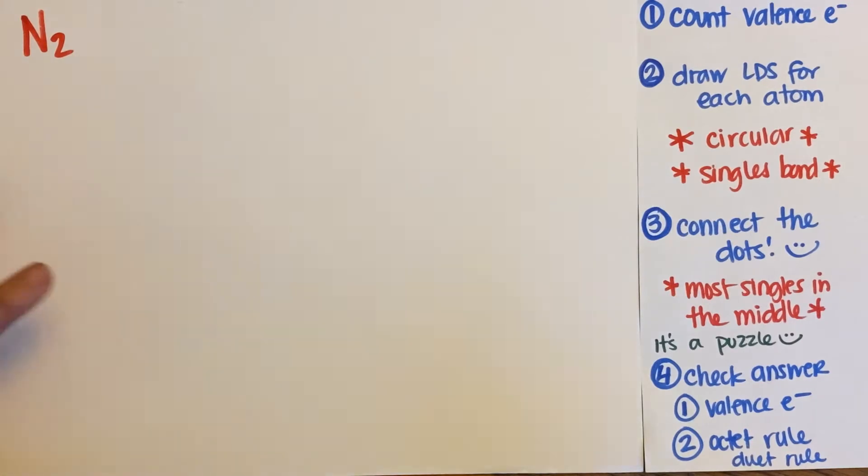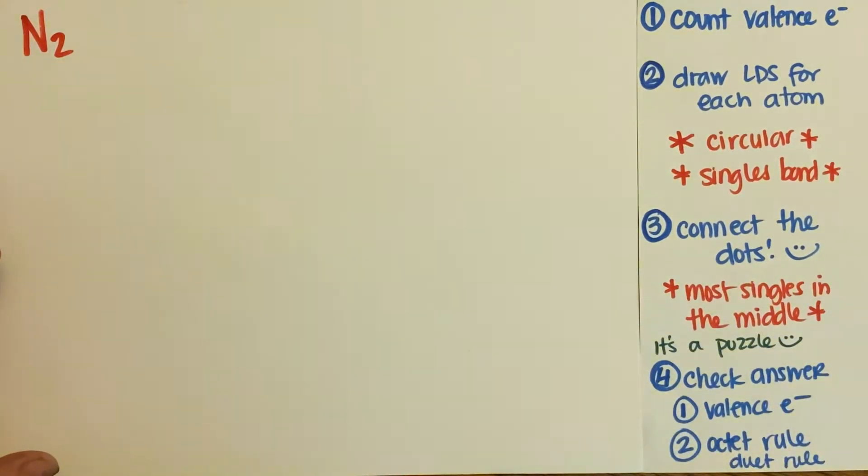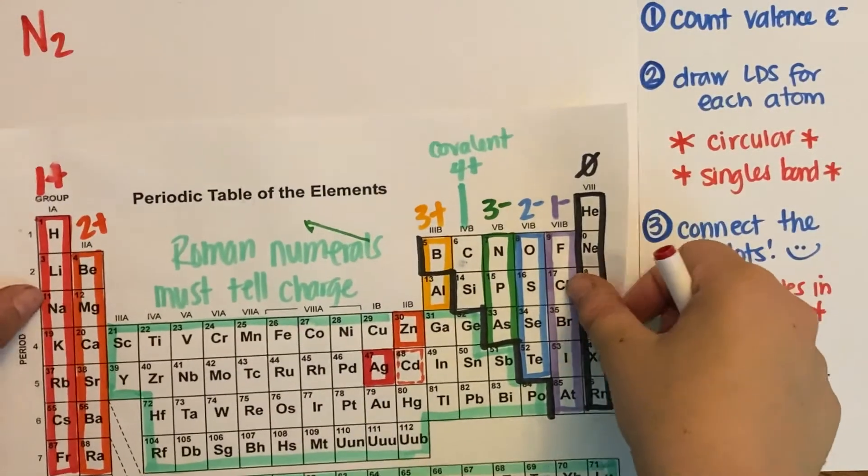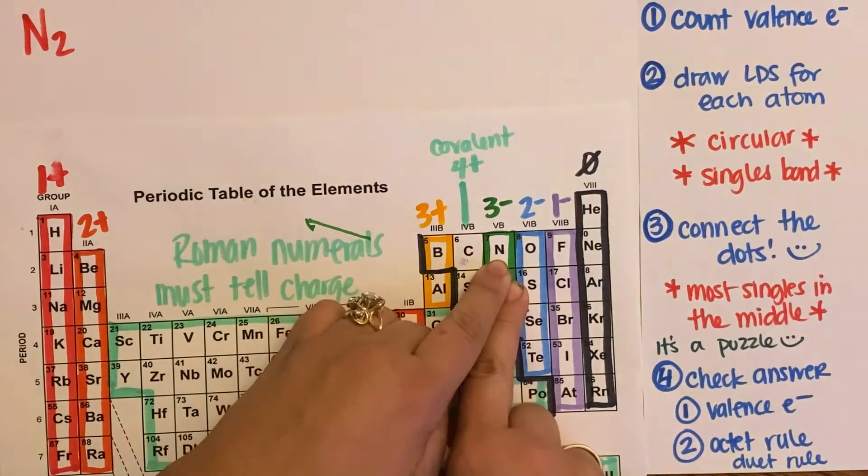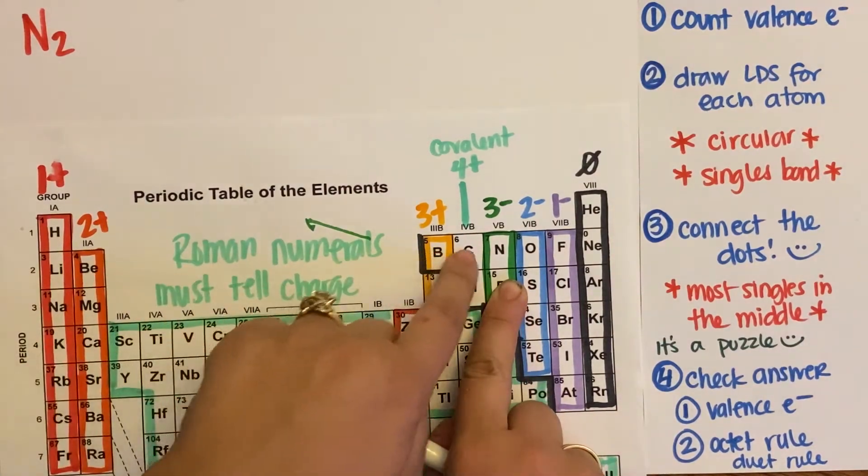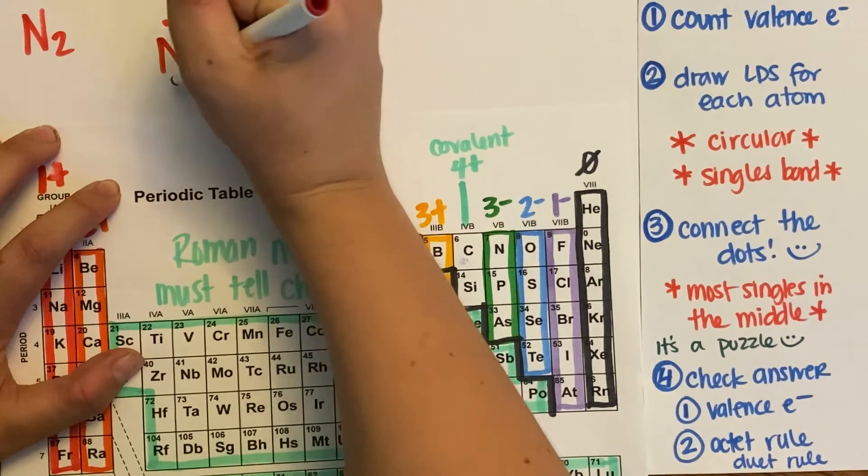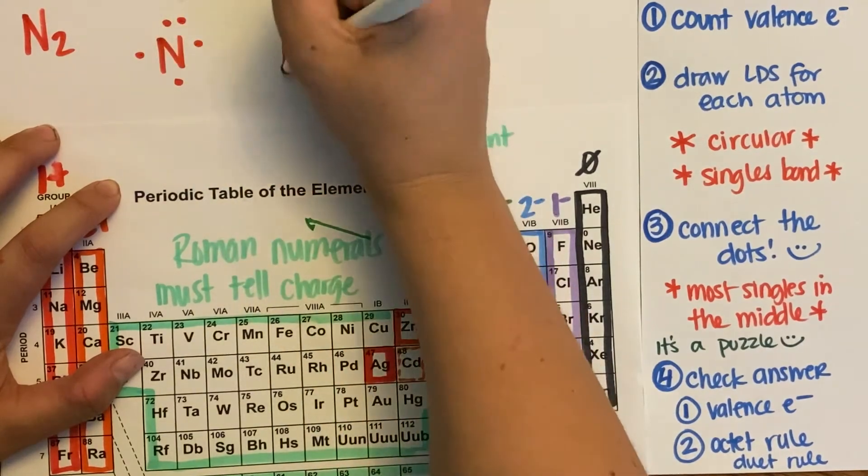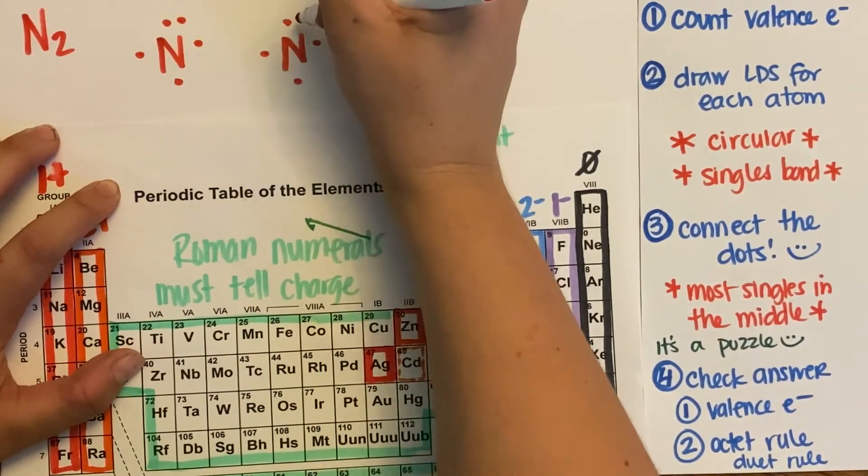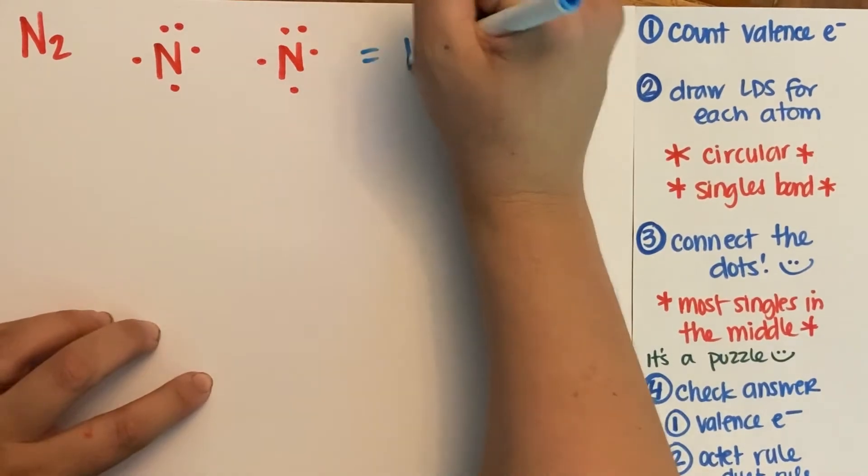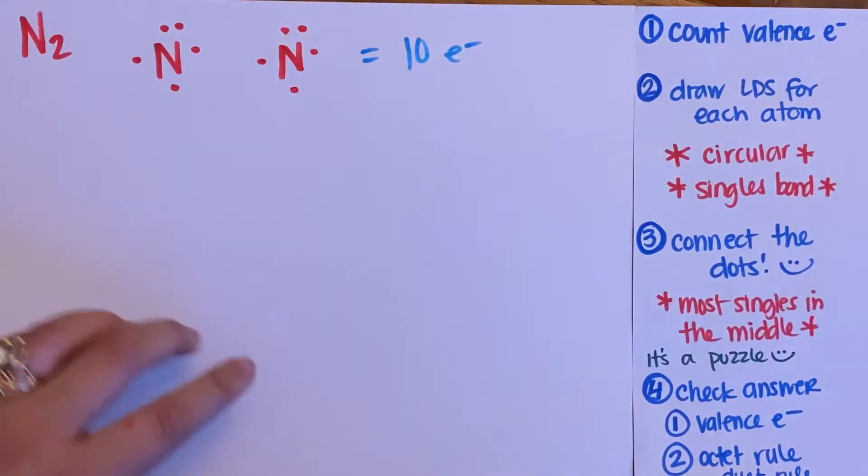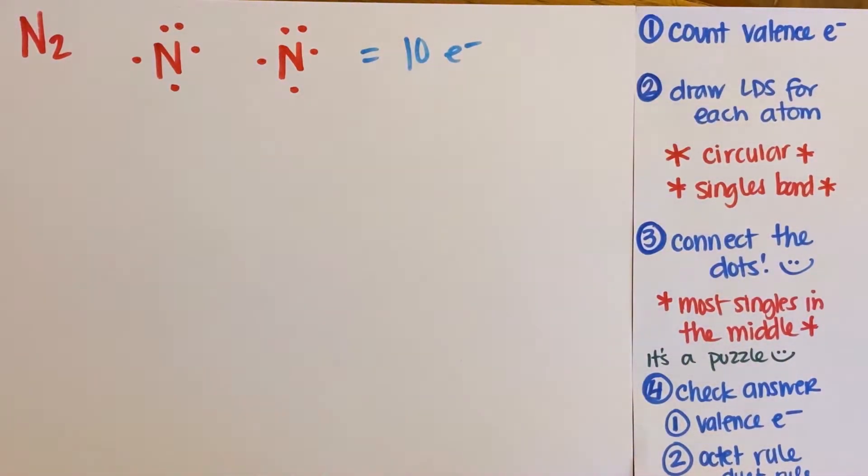N₂ is nitrogen gas, which is actually the majority of the atmosphere. Fun fact. So N is right next to oxygen, so only five valence electrons. One, two, three, four, five. One, two, three, four, five. One, two, three, four, five. So if I was counting up my valence electrons, five plus five is ten. So I start with ten valence electrons. I better end with ten valence electrons.